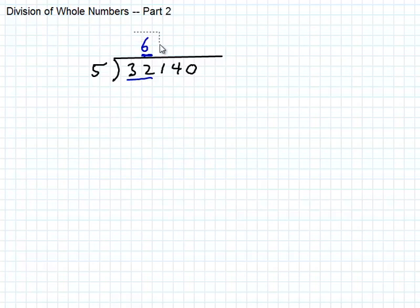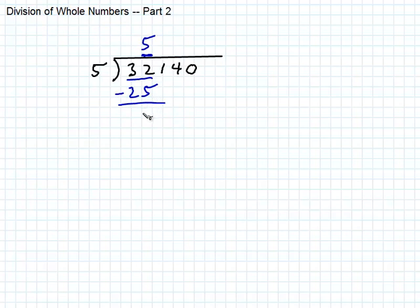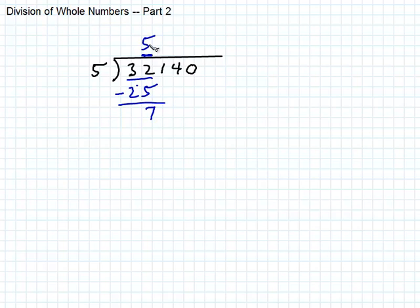Let's do it wrong so we recognize what it looks like. What if I say 5 goes into 32 five times? Then 5 times 5 is 25, and I subtract: 32 minus 25 gives 7. But notice the 7 is too big — it's bigger than the divisor 5. So we didn't put a big enough number up here. Whenever you get a remainder larger than the divisor, you have to go back and change it.